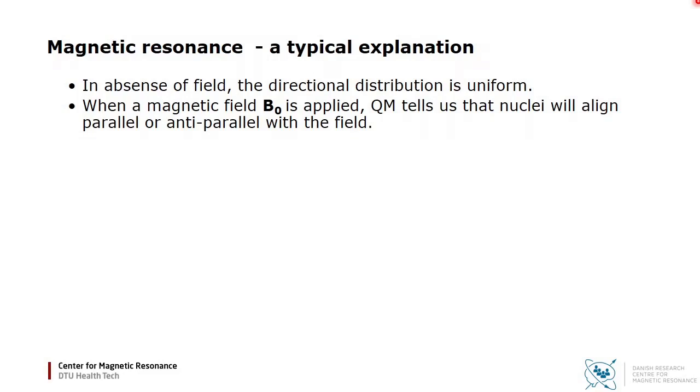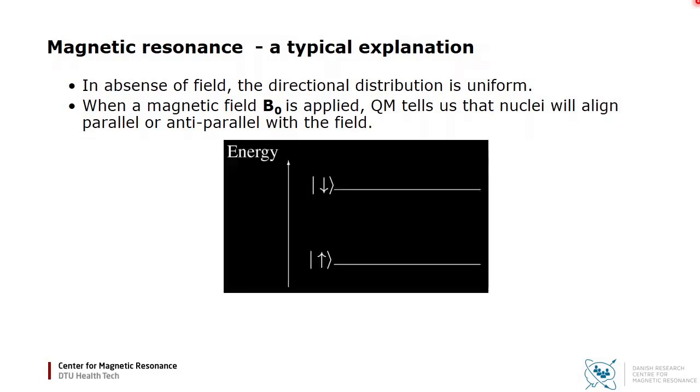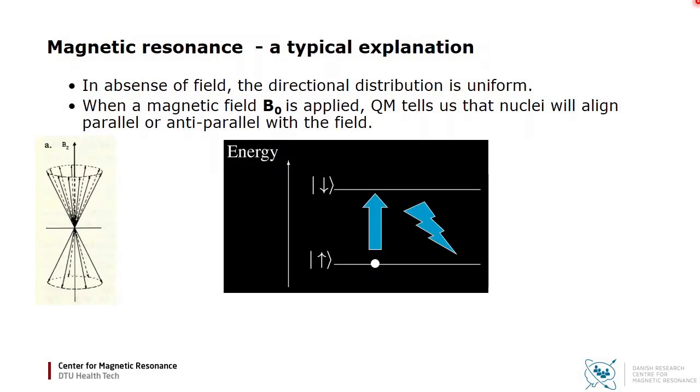It goes like this: In absence of field the directional distribution is uniform. When we apply a magnetic field B0, then quantum mechanics tells us that nuclei will align parallel or anti-parallel to the field. There will be a surplus in the spin-up state. And then when we apply radio waves, the population is moved to the spin-down state. And when they return to spin-up, then we have emission of radio waves.